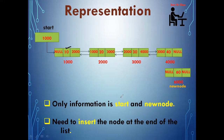The only information we have is start and the new node we want to insert. When creating the new node, we keep the information in the info part. The next part is null, and since this is a doubly linked list, we also keep the previous part as null.